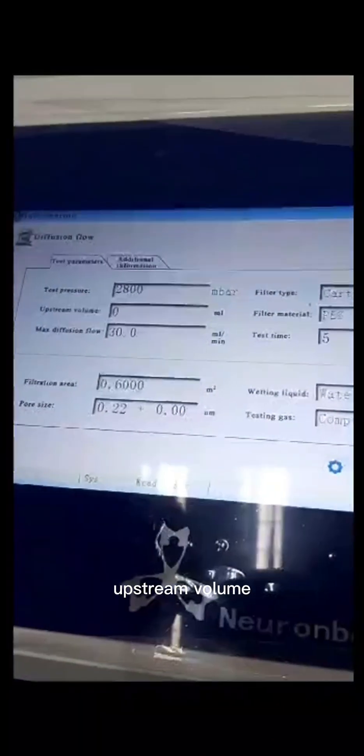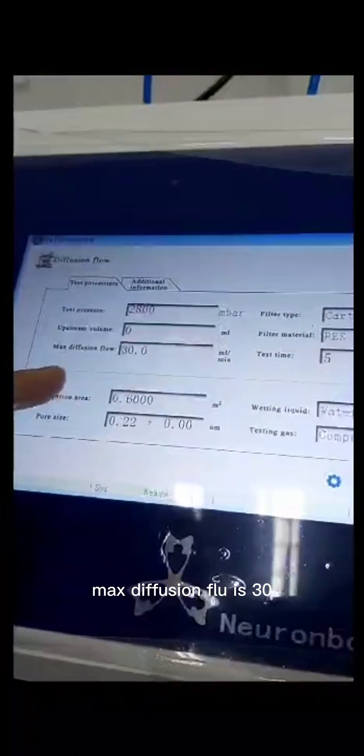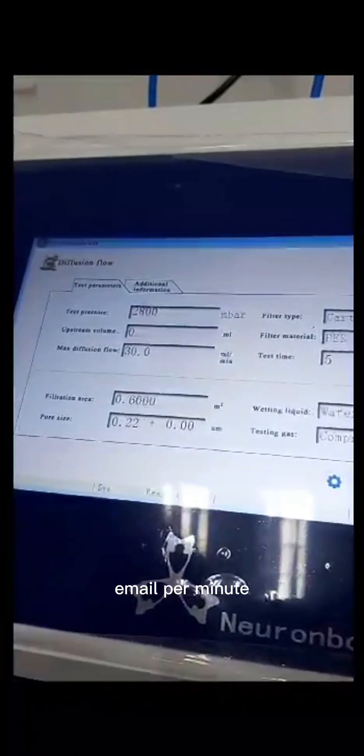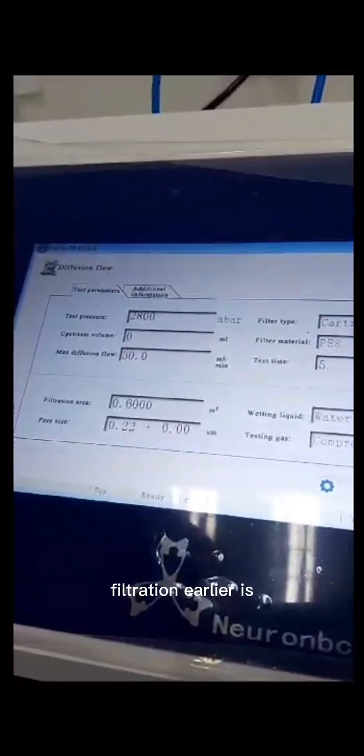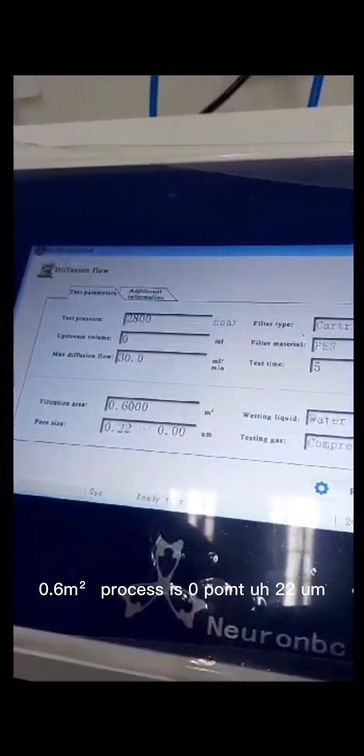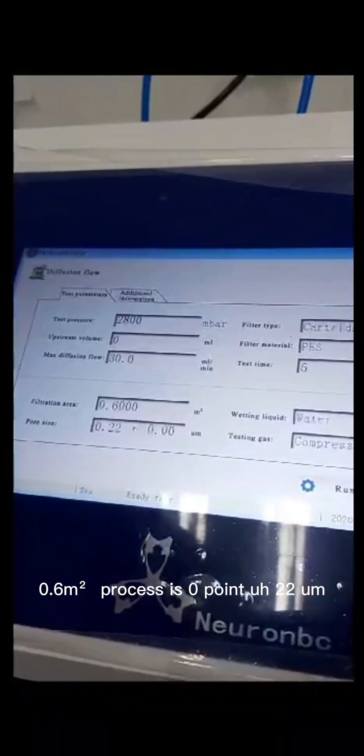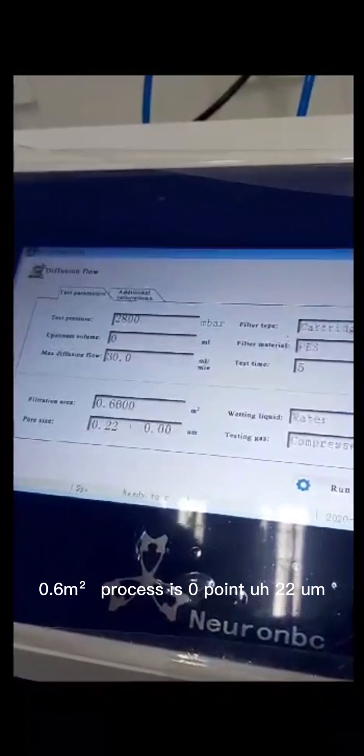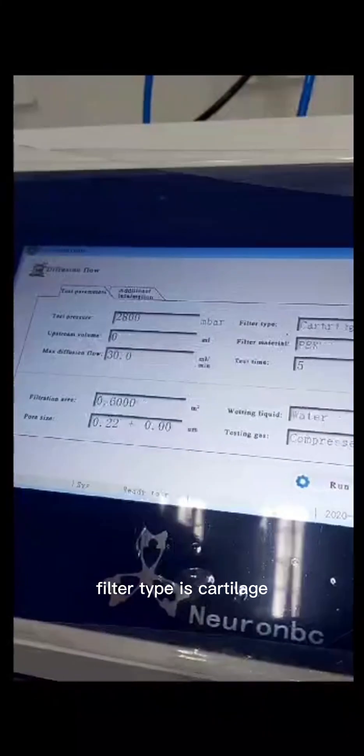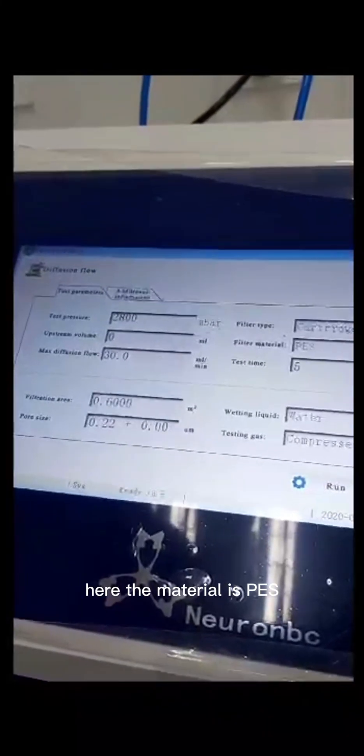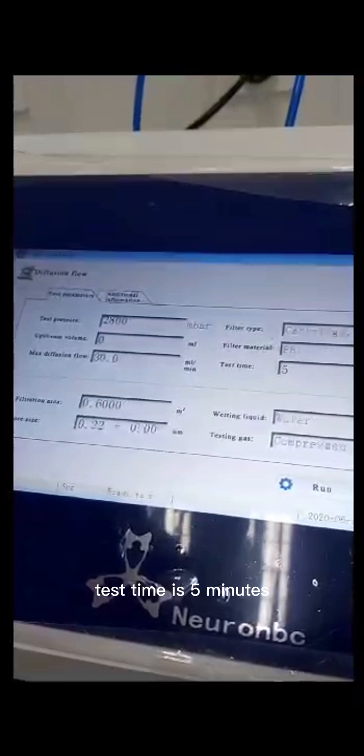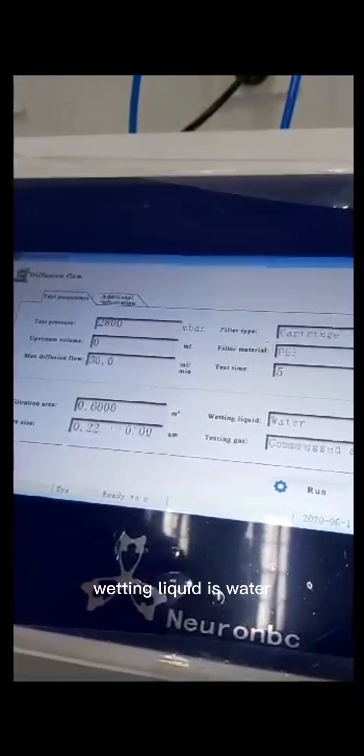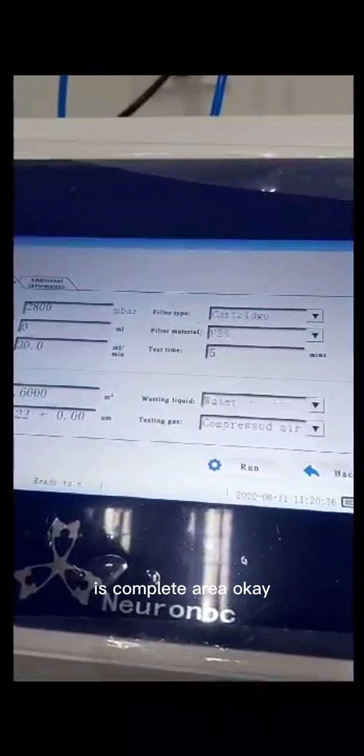Upstream volume. Max diffusion flow is 30 ml per minute. Filtration area is 0.6 square meter. Flow size is 0.22 U.M. Filter tap is catalytic. Filter material is PES. Test time is 5 minutes. Wetting liquid is water. And test gas is compressed air.